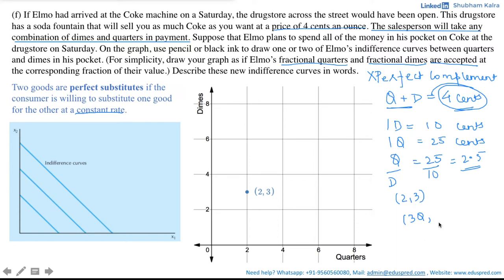That is, if you want to increase the amount of quarters Elmo has by one quarter, then we have to take away some of the dimes with him so that he remains at the same indifference curve or the same satisfaction level. And how much will that reduction be? Here, we saw that one quarter is equal to 2.5 dimes. So, if we are increasing the quarters by one unit, thus we have to decrease the dimes by 2.5 units. That would be 3 minus 2.5 which is 0.5. Thus, his new situation would be at this point.